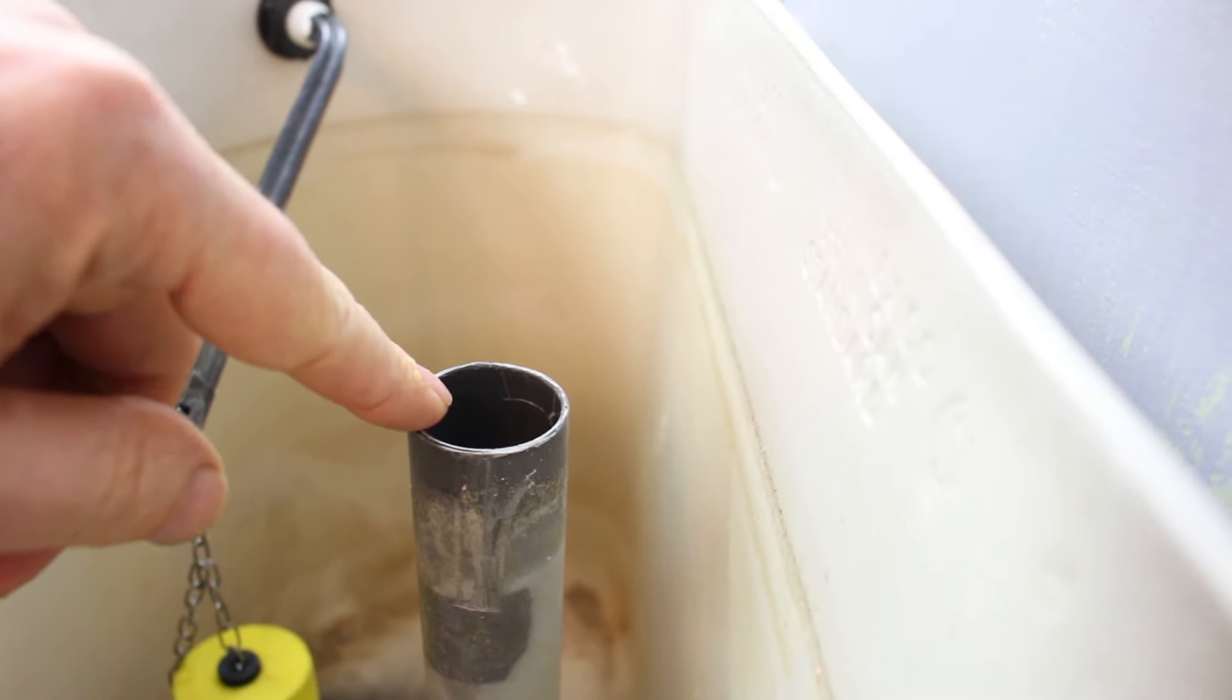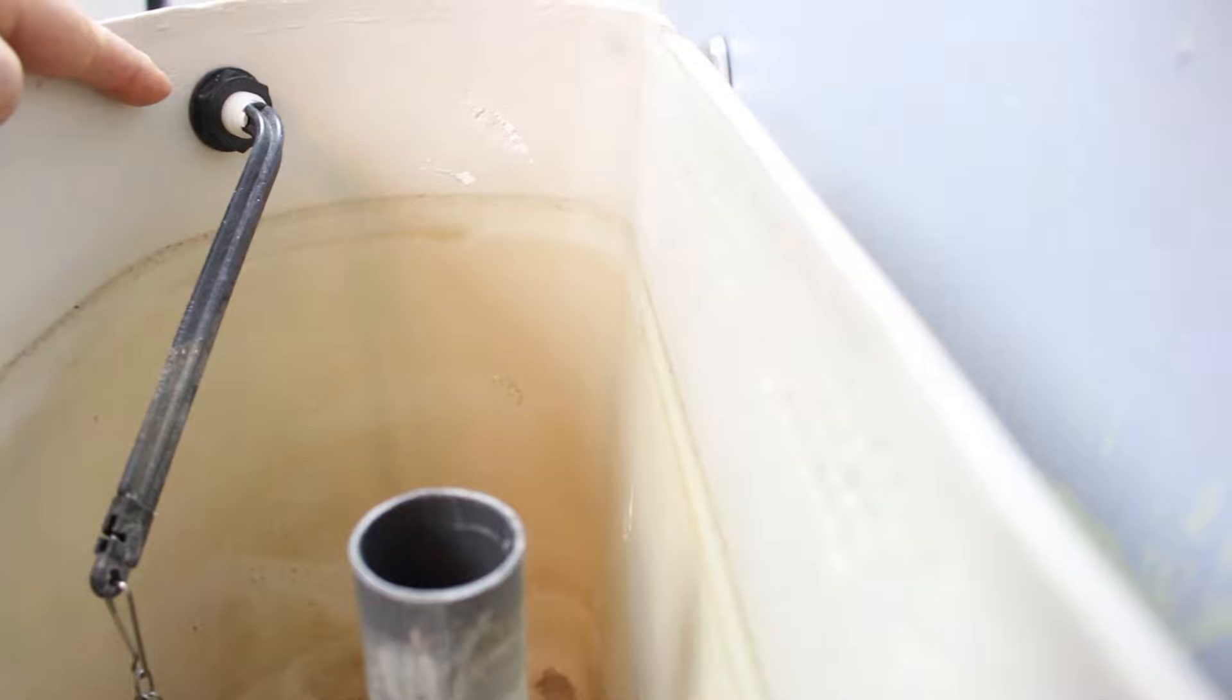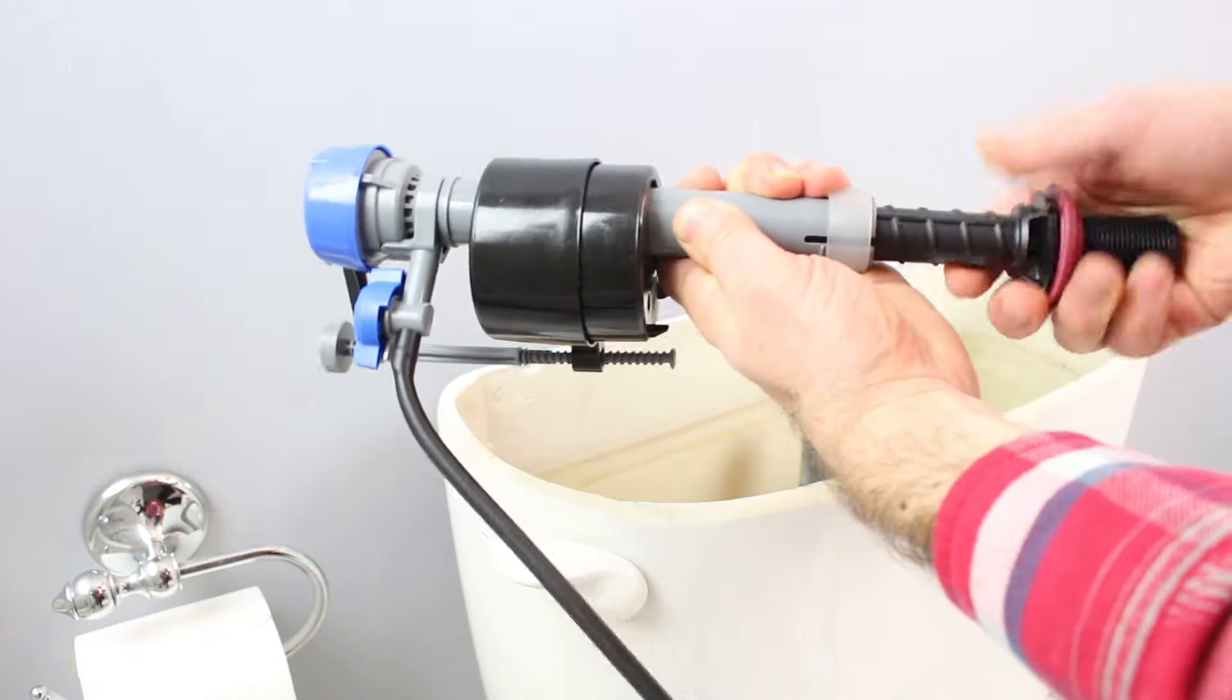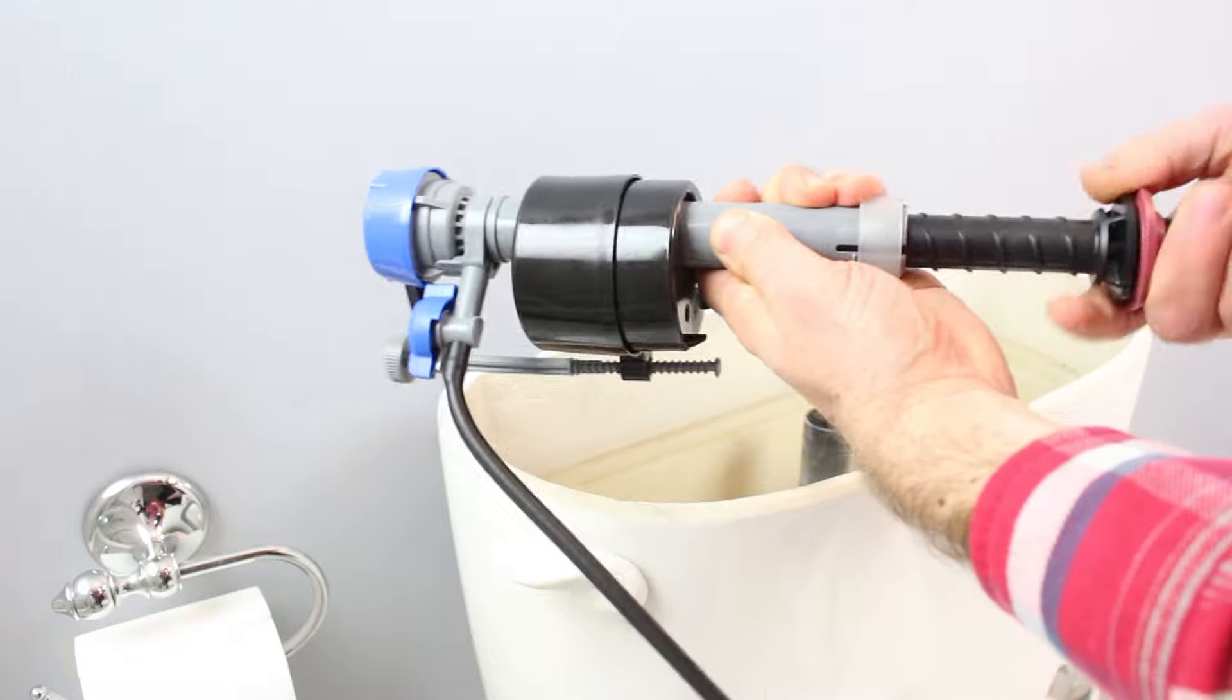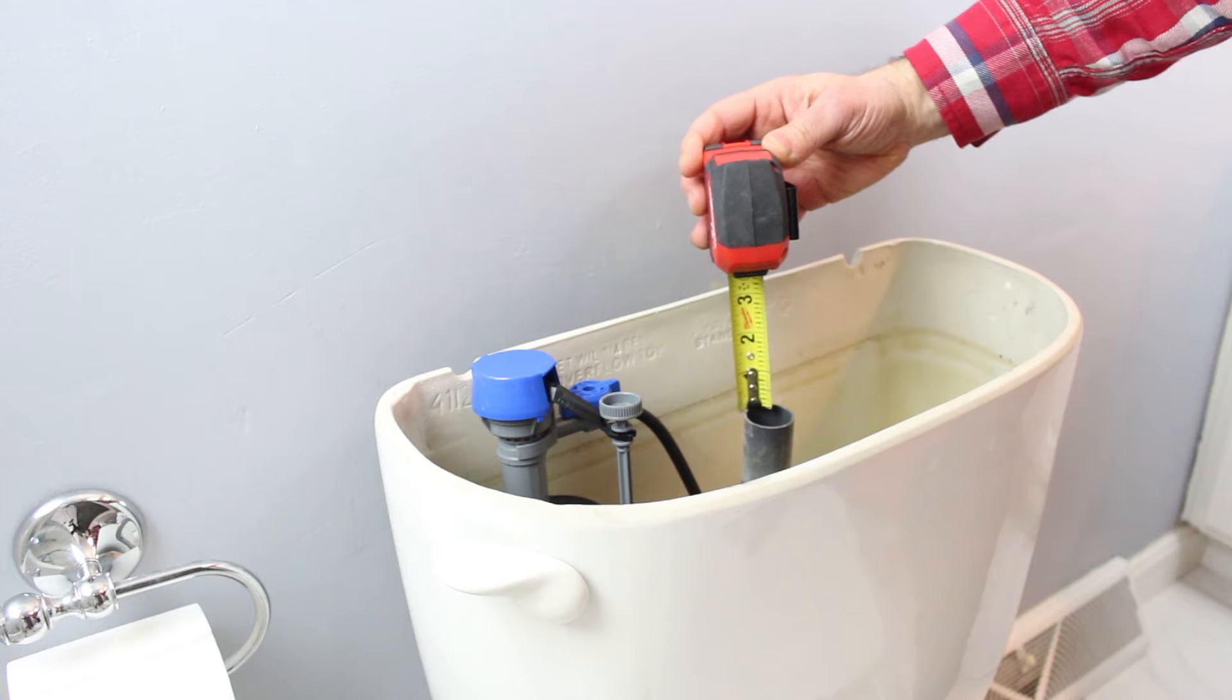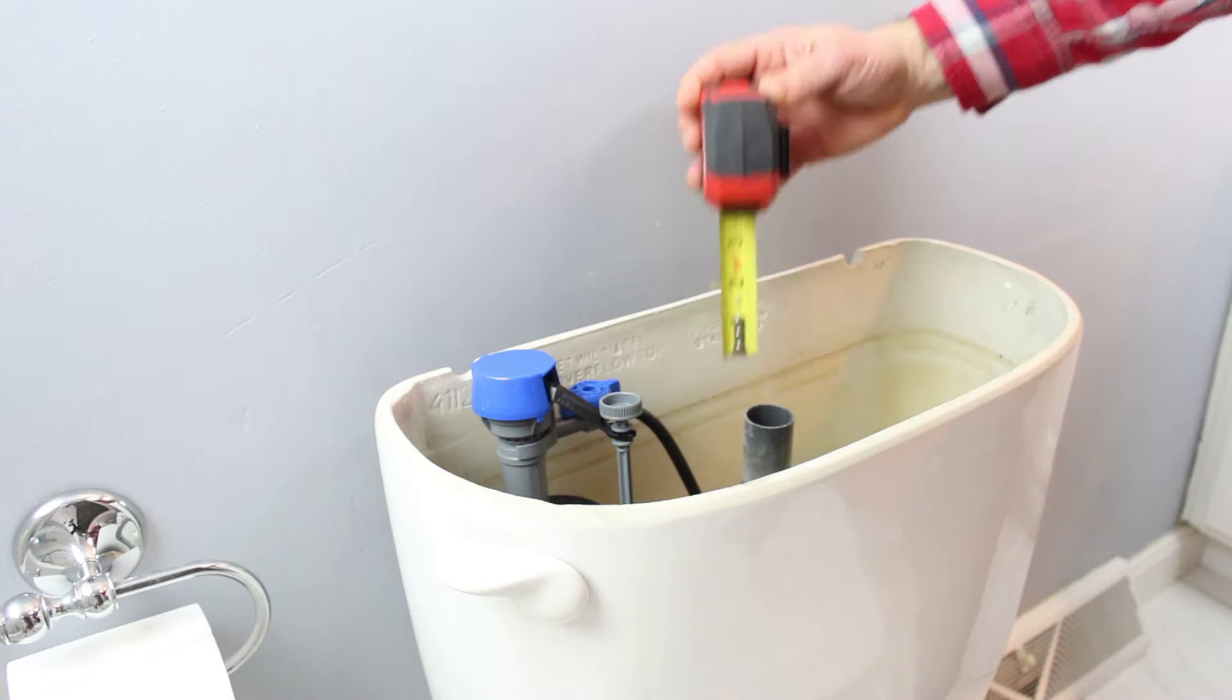The other thing is the top of the flush valve needs to be 1 inch below the tank lever location. We're going to unscrew the fill valve and make it higher so that when we dry fit it, we have the 3 inches between the top of the flush valve and the top of the blue cap.